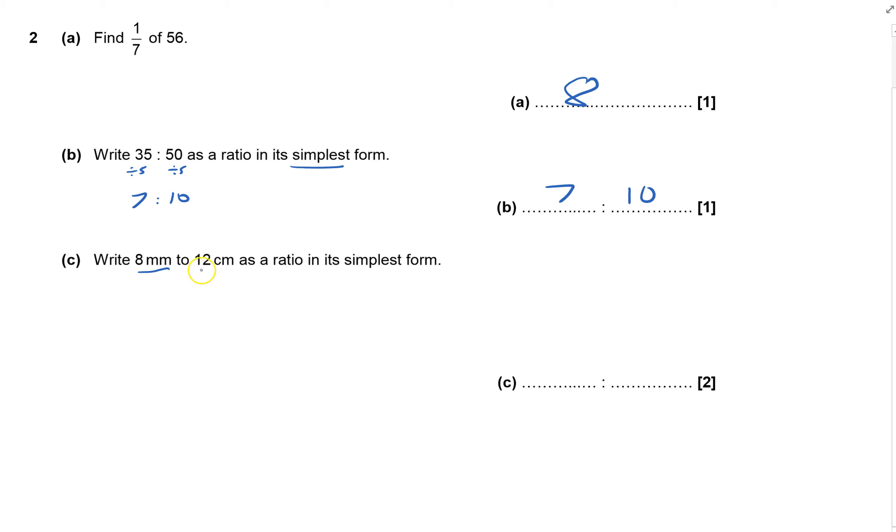Right, 8mm to 12cm as a ratio in its simplest form. I need to get them both in the same unit. I could put the 8mm as 0.8cm, but it's better to turn the centimeters into millimeters. That would be 120mm. And now it's much easier. That's 8 to 120, and divide both by 2.